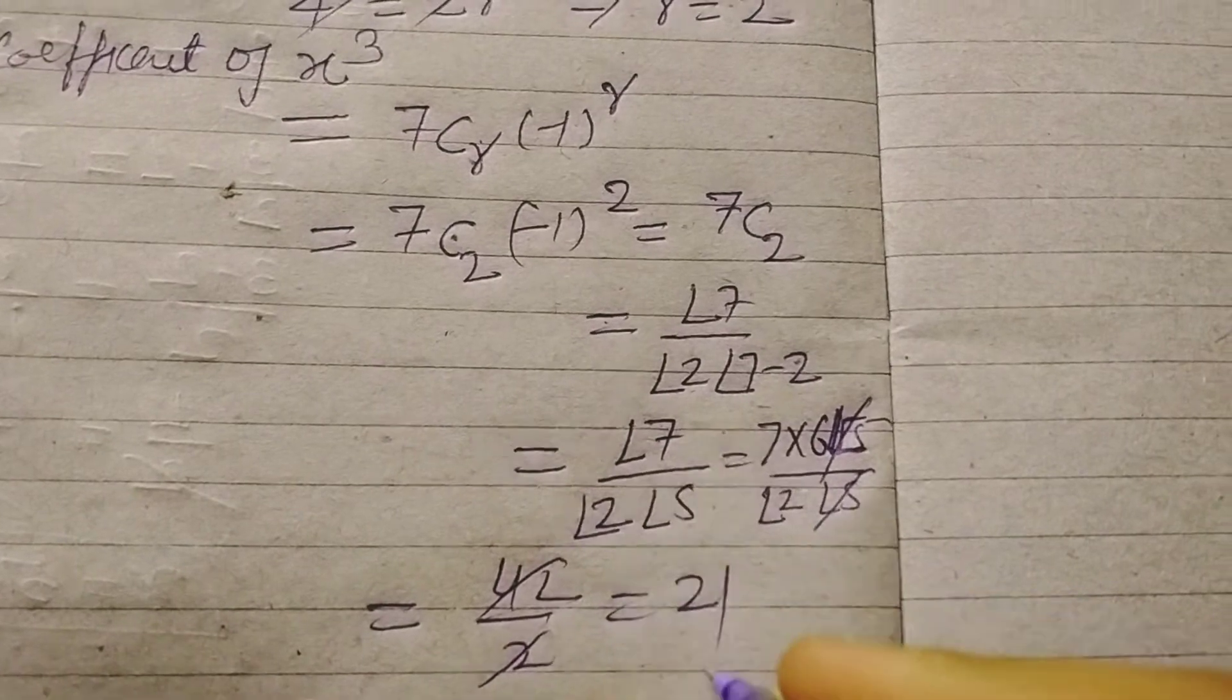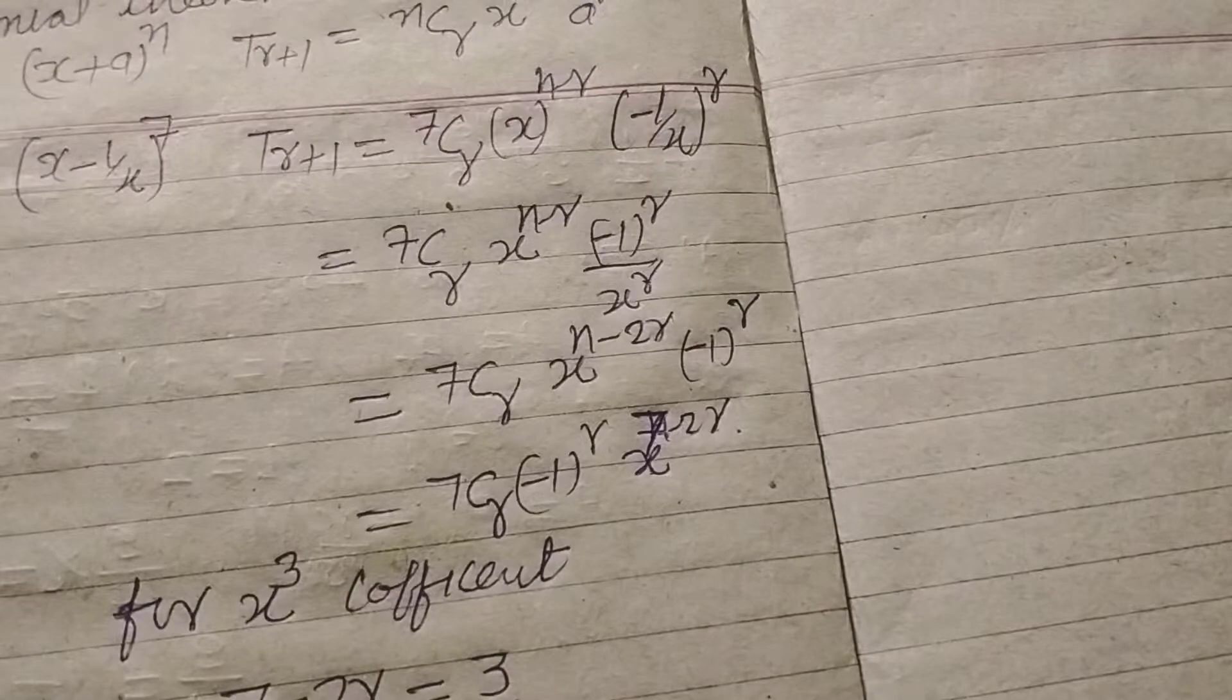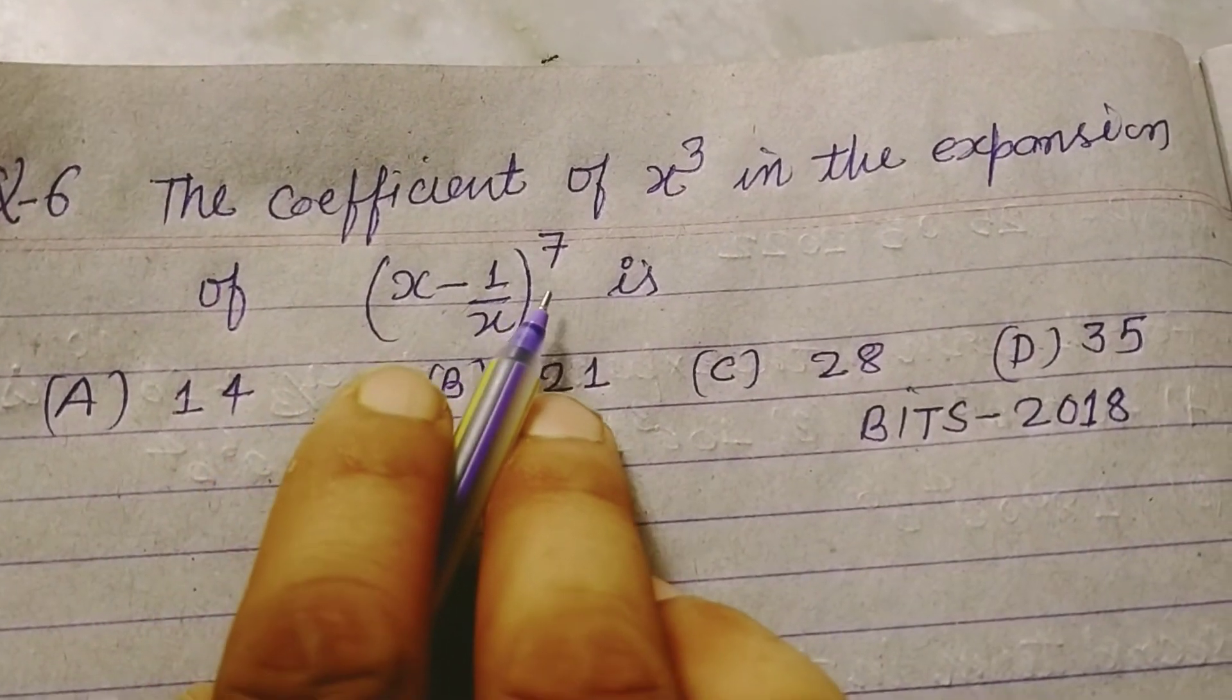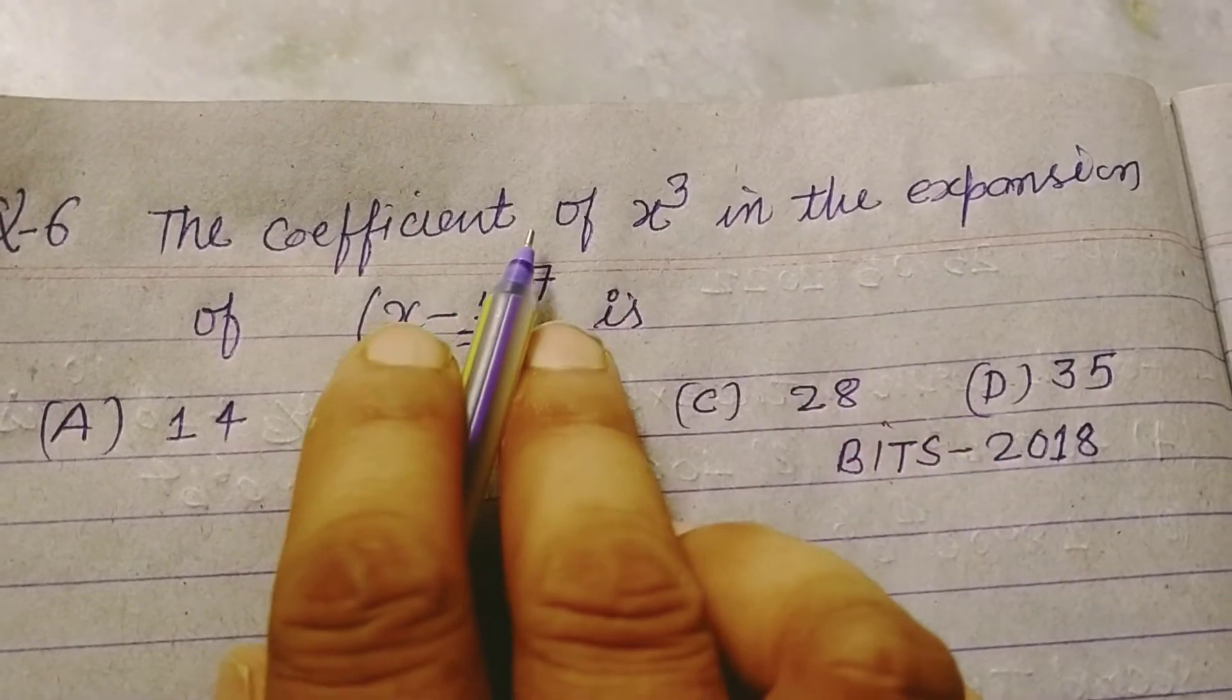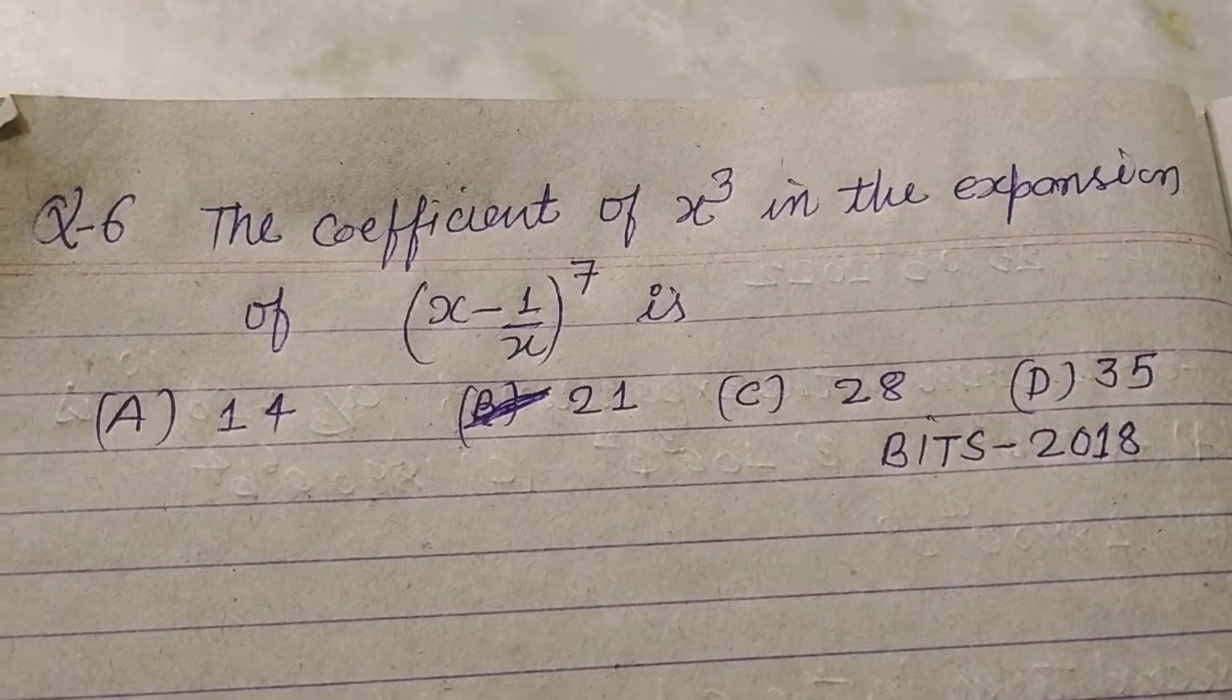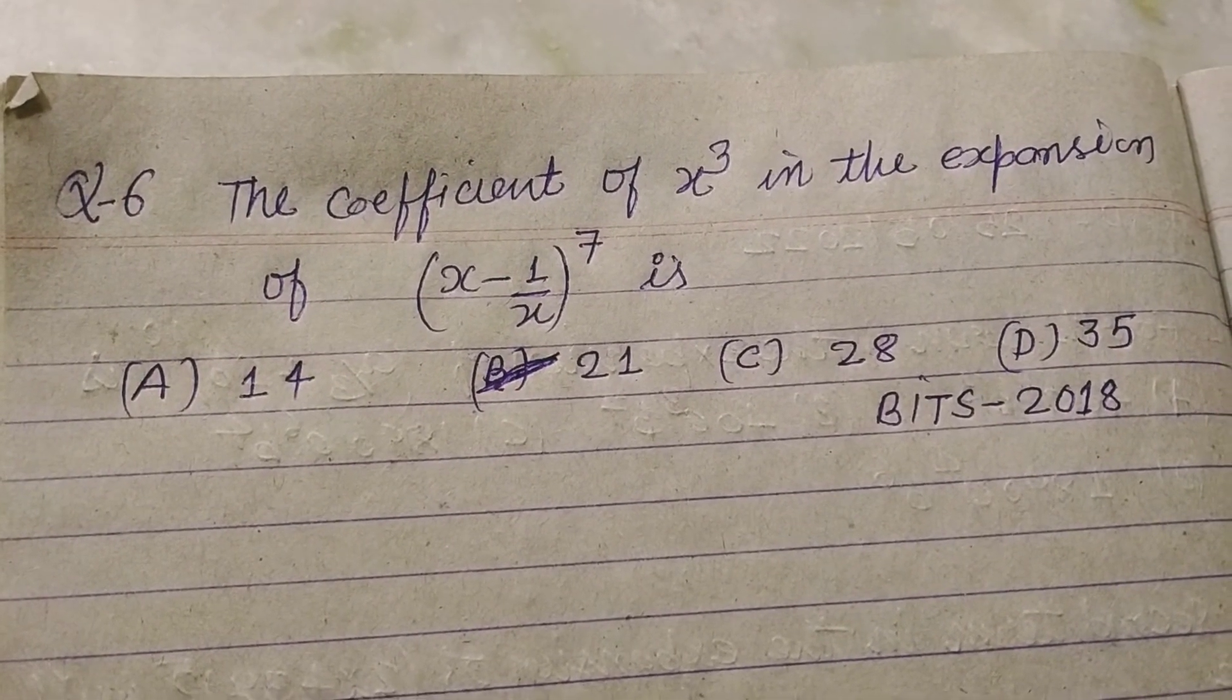So the coefficient in the expansion of x minus 1 upon x to the power 7 of x cubed is 21, which is found in option B. In this way we solve this problem. I hope you got it. Thanks for watching.